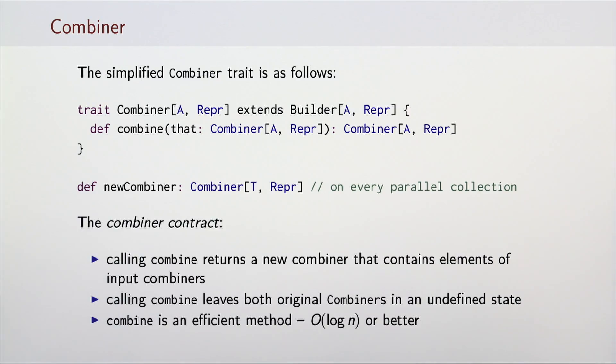Now that we saw what builders are, let's take a look at their parallel counterparts. A combiner is a parallel version of a builder. We again show a simplified version of this trait. In addition to the builder method, combiners have a method combine, which merges two combiner objects together. Every parallel collection must implement a new combiner method, which creates a new combiner object specific to that collection.